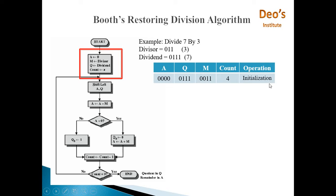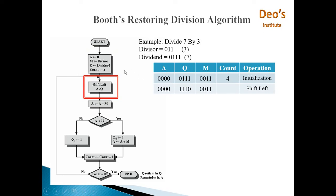This is the initialization step. Next step is shift left A,Q. We will shift left A and Q. This is not an arithmetic shift as we have seen in the multiplication algorithm — this is a normal shift operation. So this 0 will go out, 0 will come here: 0,0,0. And this 0 will come here: 0,1,1. A new 0 will be added from the right end. M will remain as it is.